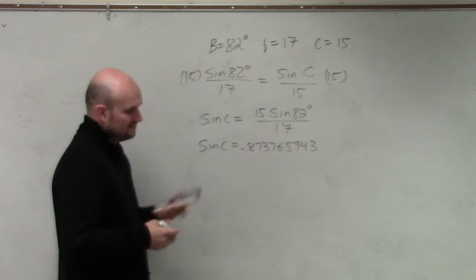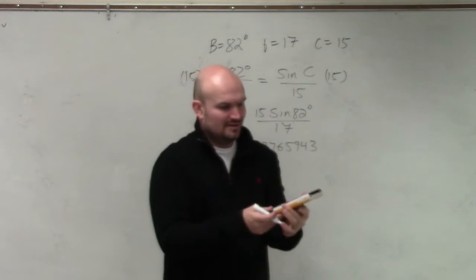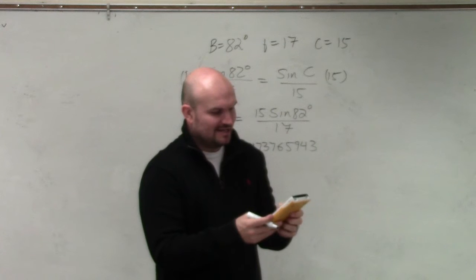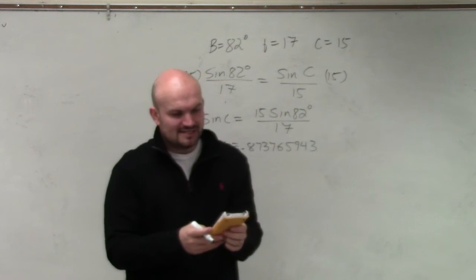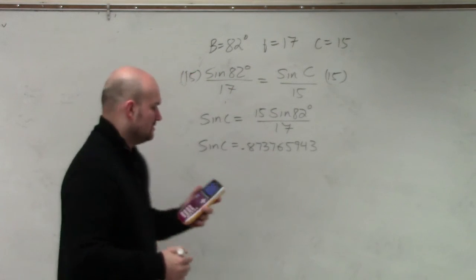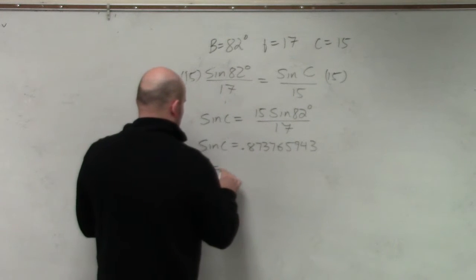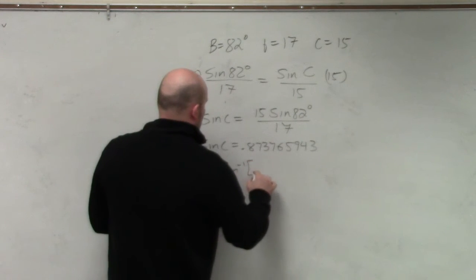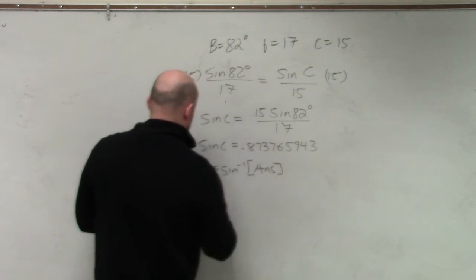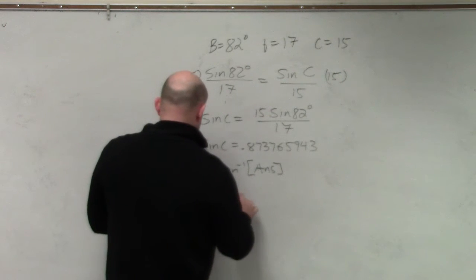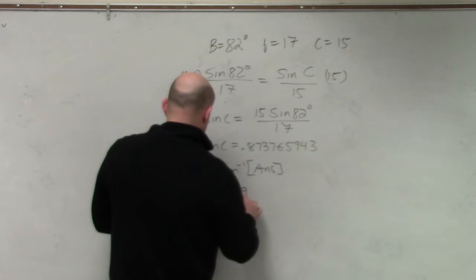But we don't need to write all that in. You can just keep that in your calculator and just do sine inverse of your last answer. And I get C equals sine inverse of my answer, and I get 60.9 rounded.